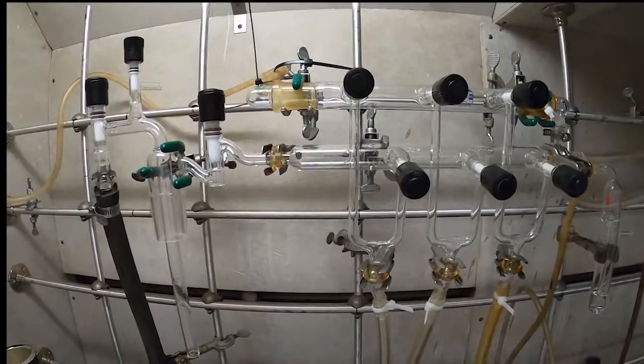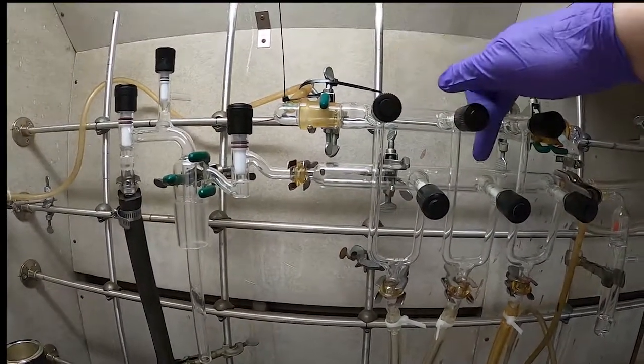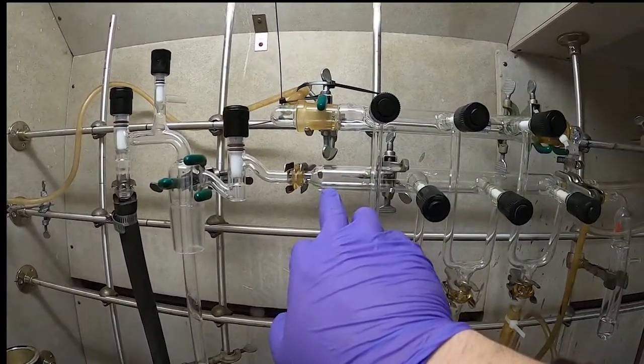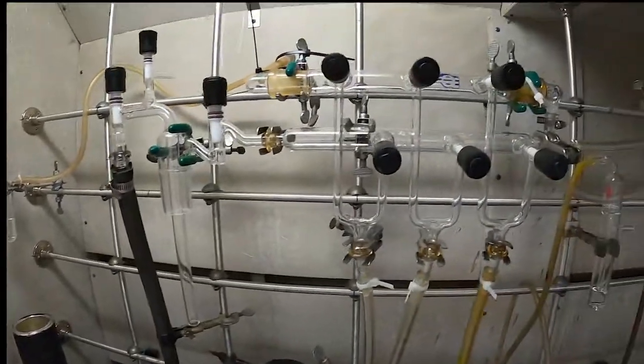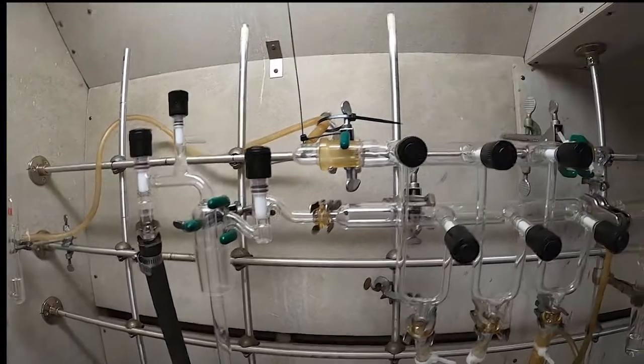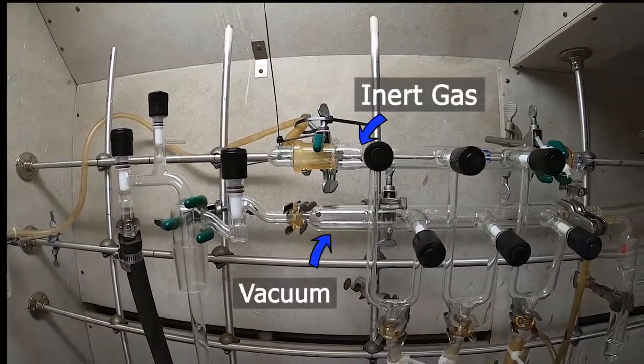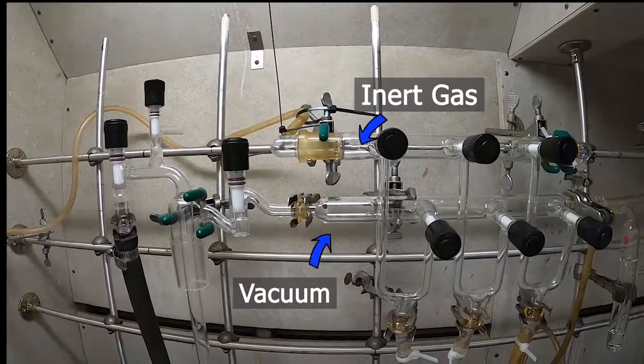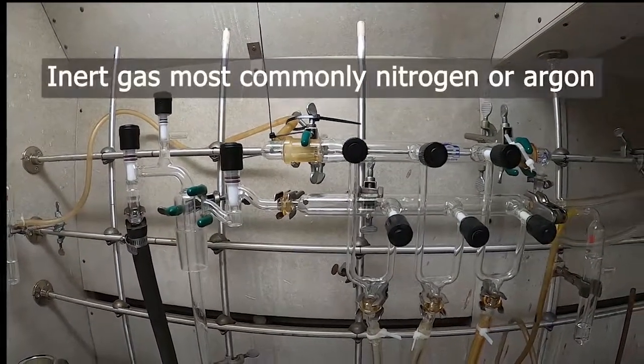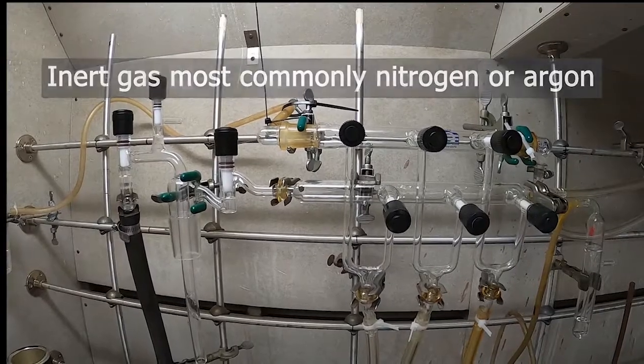So with the two parts of the manifold, we have this lower one, which is for the vacuum. As you see, it's connected to this dark hose, which goes down to the vacuum pump. And then the upper one, which is our inert gas. The inert gas can be nitrogen or argon. Those are the common ones. Other gases are also possible, but the most common are, again, nitrogen and argon.